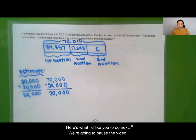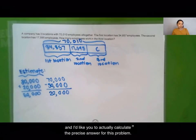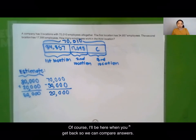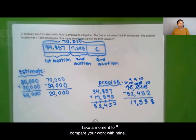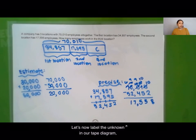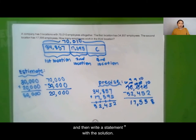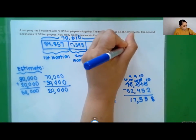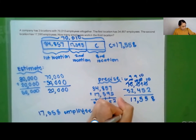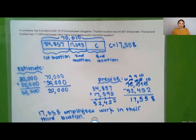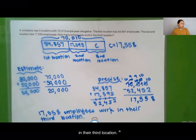Now pause the video to calculate the precise answer for this problem. Take a moment to compare your work with mine. Let's label the unknown in our tape diagram and then write a statement with the solution. Read the statement with me: 17,558 employees work in the third location.